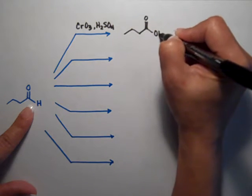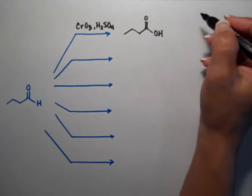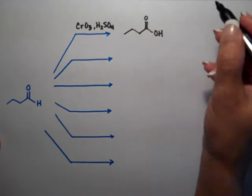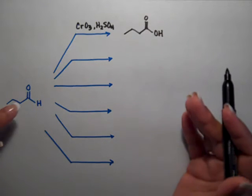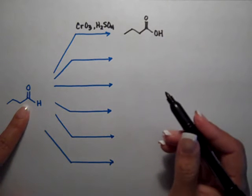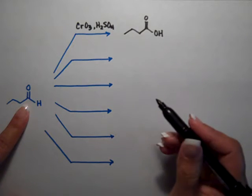We learned this reaction in the last semester but I need to remind you of it because the next couple of chapters are going to be about carboxylic acids. Now in this chapter we also learned how to reduce the carbon oxygen double bond and we need a hydride reagent for that.